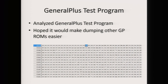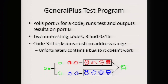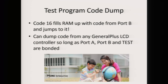The next thing I did was analyze the General Plus test program. This was of interest to me because it's on every single General Plus LCD controller, so I thought it would be useful for dumping older Tamagotchis and generally useful for everything that runs General Plus. It turns out you start up with the test pin pulled, and then it pulls port A for a code, and puts output on port B. The most interesting code was code 16, which would actually take code off of port B, fill up RAM with it, and jump to it. That basically means there's now a method to dump code from any General Plus LCD controller — the caveat being that port A, port B, and test have to be bonded, so on some chips you might have to remove the epoxy.